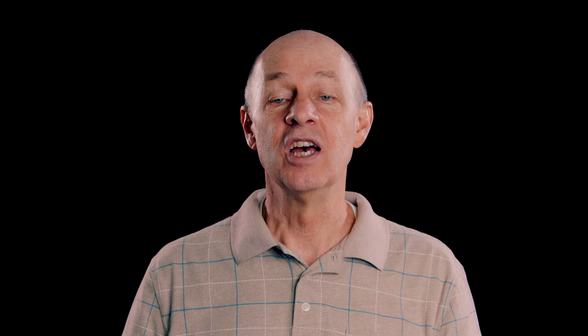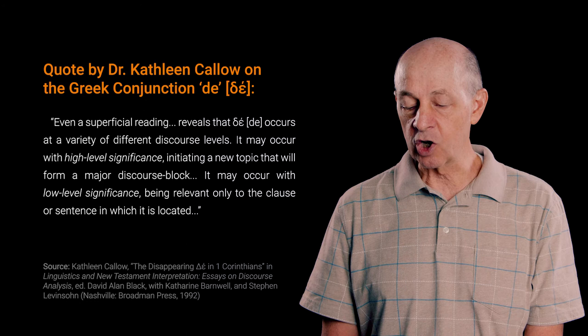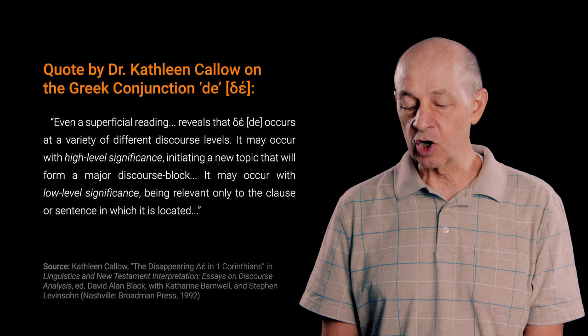In working with discourse, it's important to realize that discourse-level signals or discourse markers often function on more than one level. For example, in New Testament Greek, the conjunction δέ commonly serves as a low-level connector joining clauses or sentences, but δέ can also function as an upper-level discourse marker. Here is what Kathleen Callow says about the Greek conjunction δέ: 'Even a superficial reading reveals that δέ occurs at a variety of different discourse levels. It may occur with high-level significance initiating a new topic that will form a major discourse block, or with low-level significance being relevant only to the clause or sentence in which it is located.'